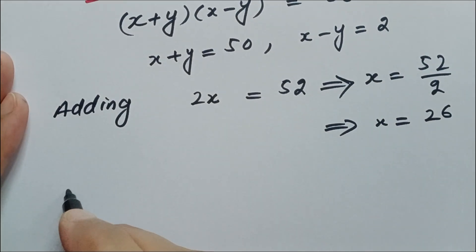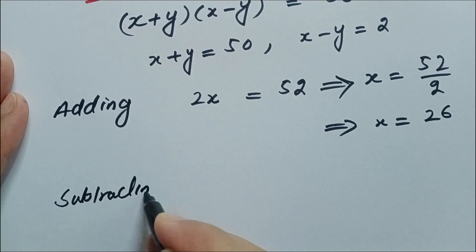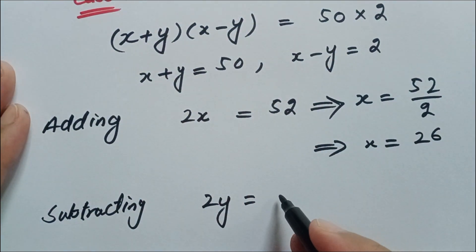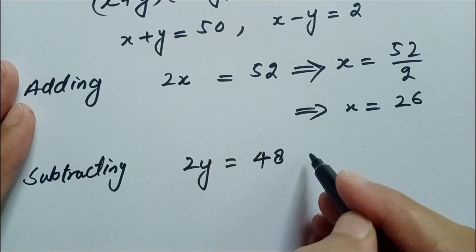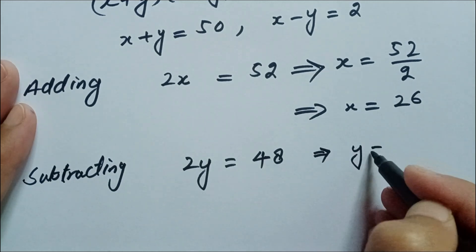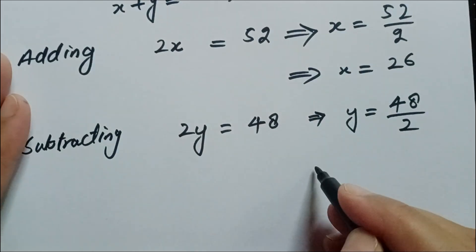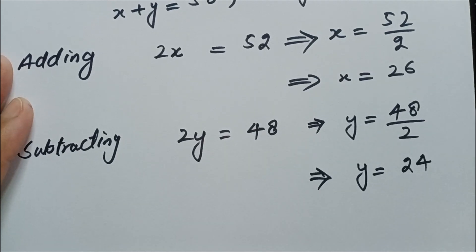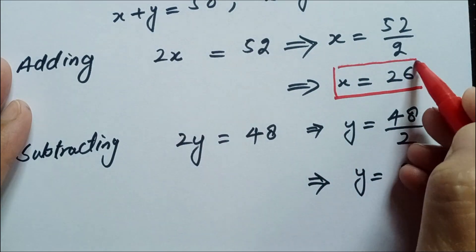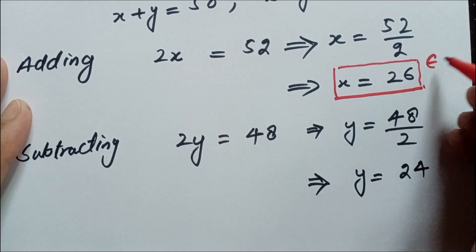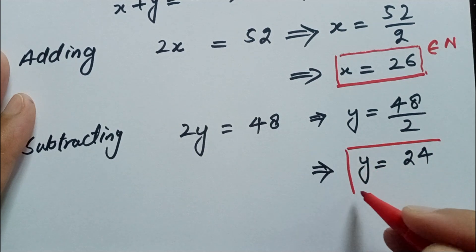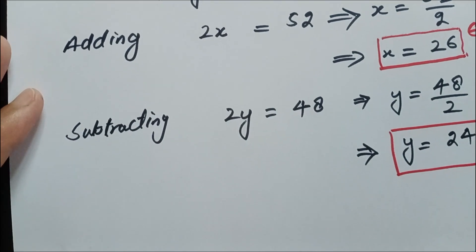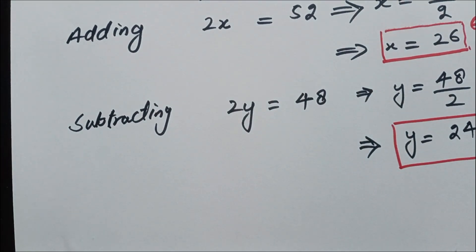By subtracting, 2y equals 48, so y equals 48 divided by 2, which gives y equals 24. Here x equals 26 is a natural number and y equals 24 is also a natural number, so we accept this case. These are the required values.